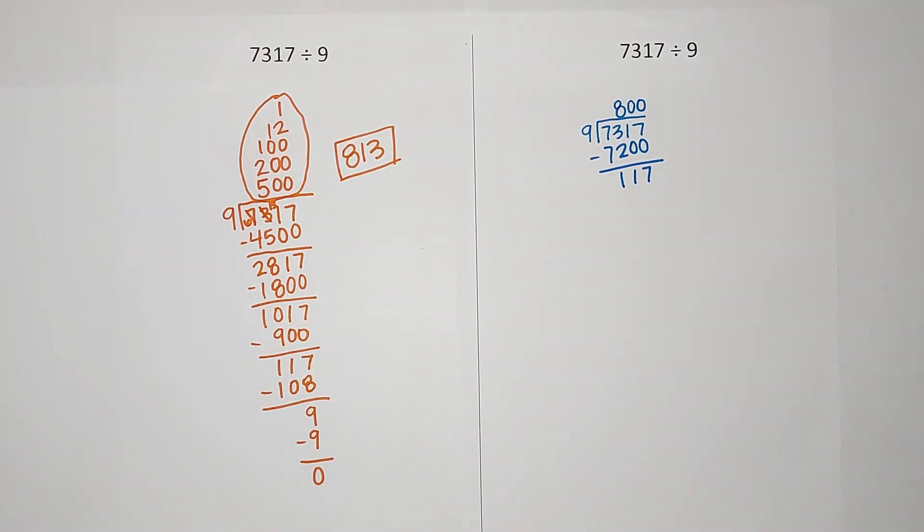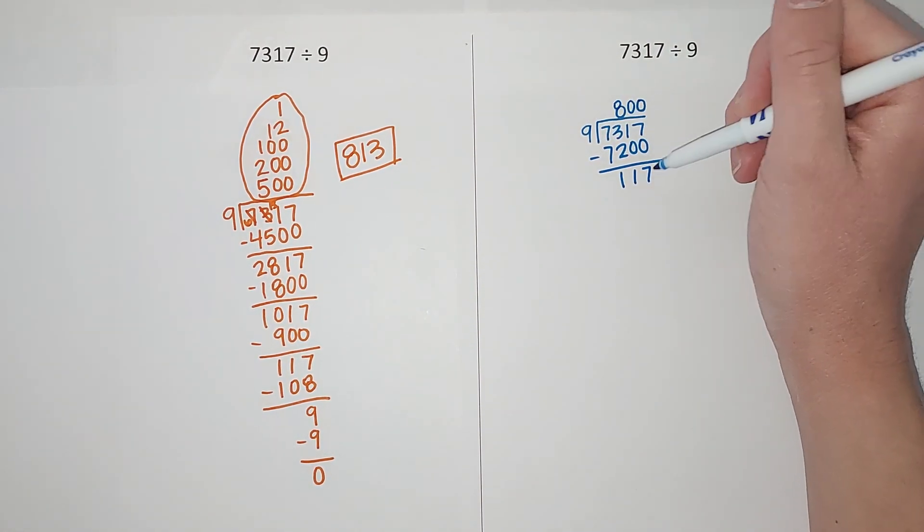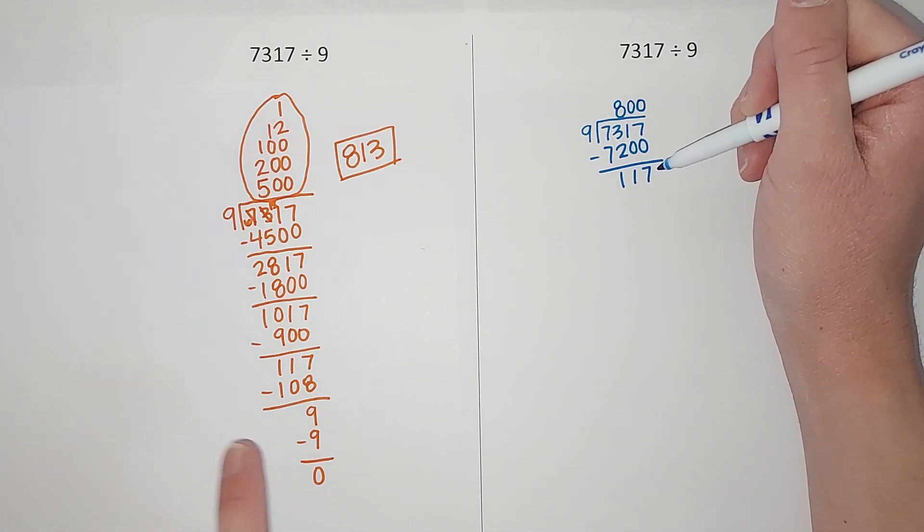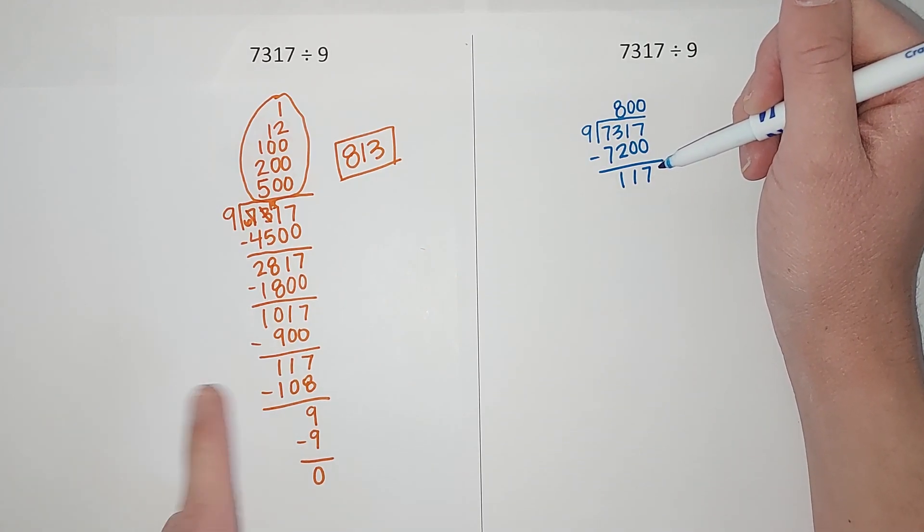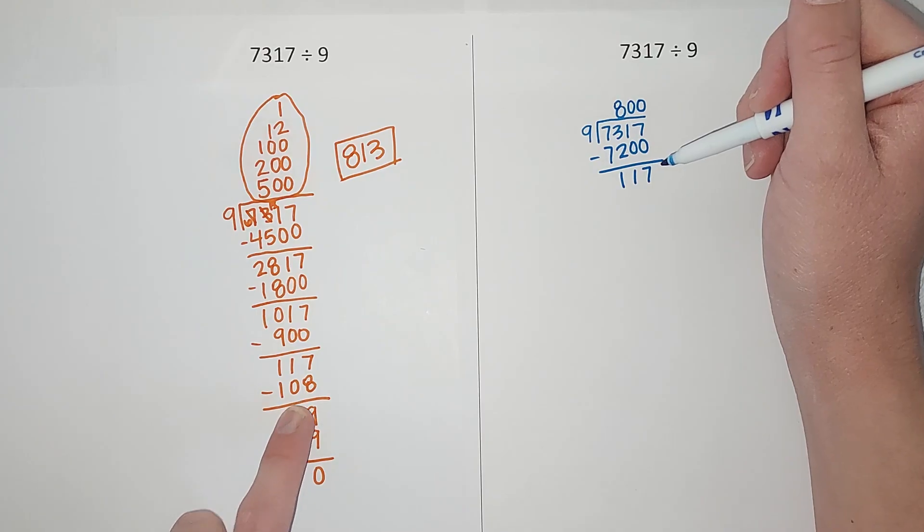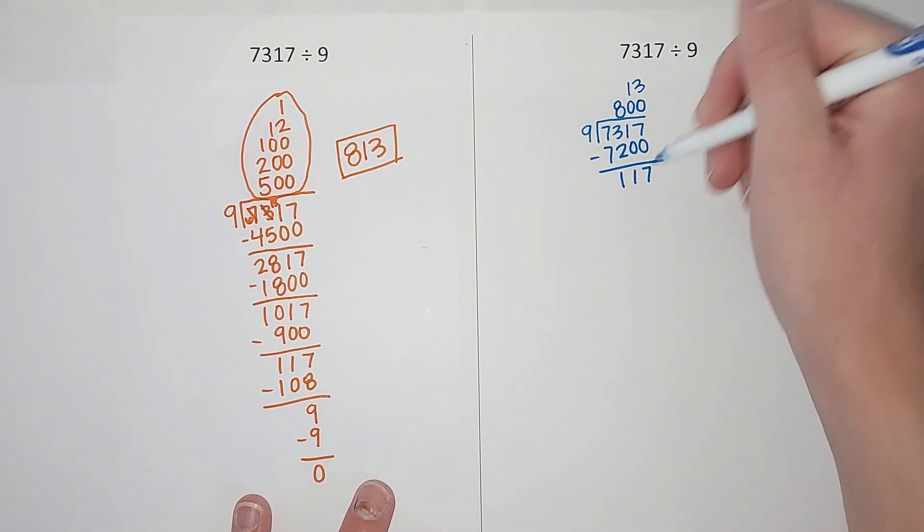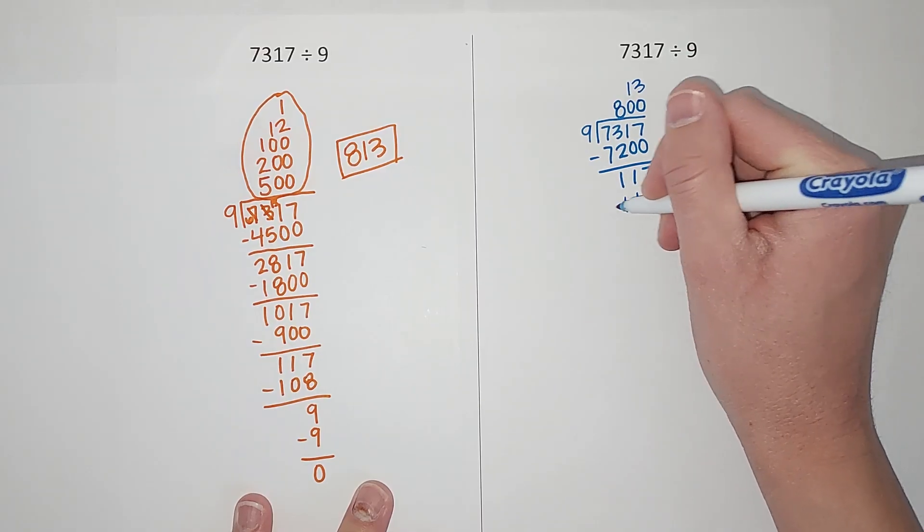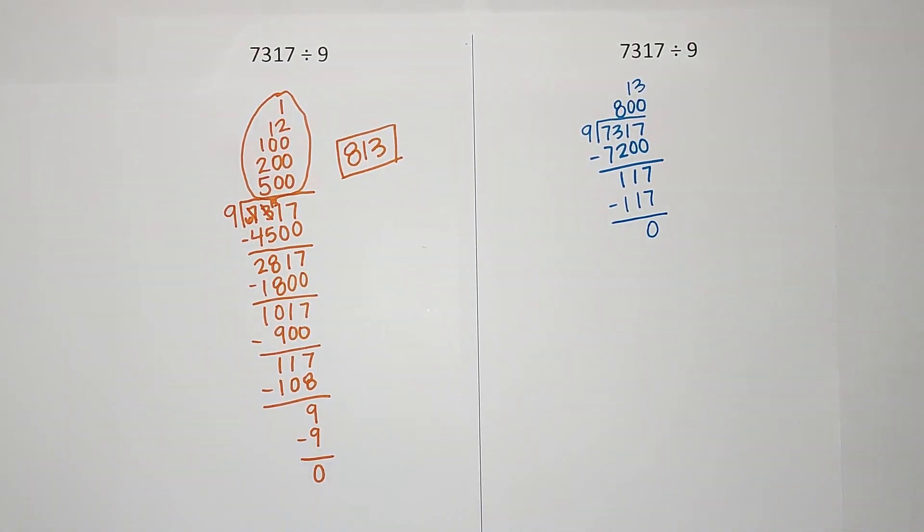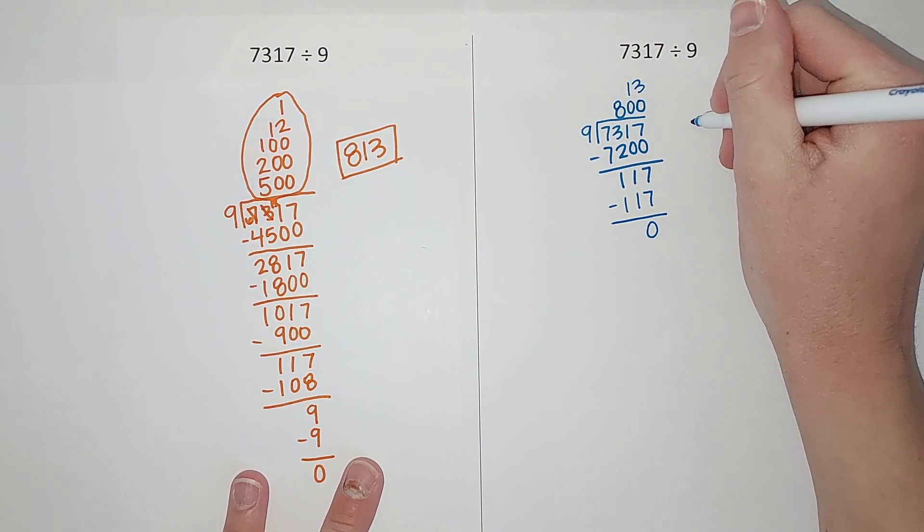Oh my gosh, then I see 9 goes into 117. Because I did it over here, I know that 9 times 12 was 108. 9 times 13 gives me that 117. And look at that, done! And then I just add those up and get the 813.